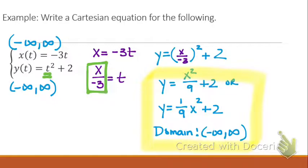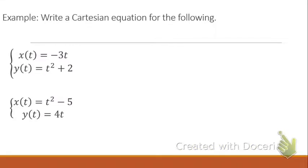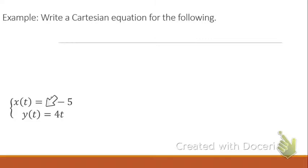You don't always have to take the x parameter to solve for t. You can also take the y parameter, solve for t, and substitute it into x. I want to do the next question just a little differently so we can see what that would look like. Because my y function is not as complex as my x function, I'm actually going to start with the y function. So let's take the y function and solve that for t, which gives me y divided by 4 equals t.